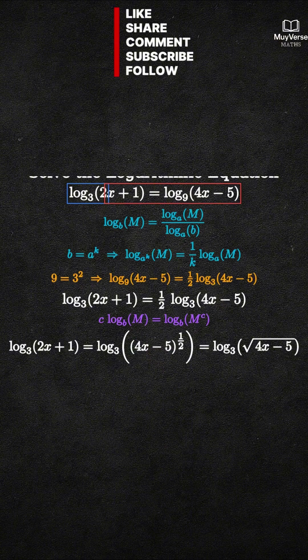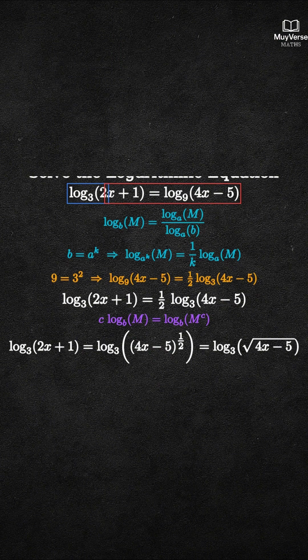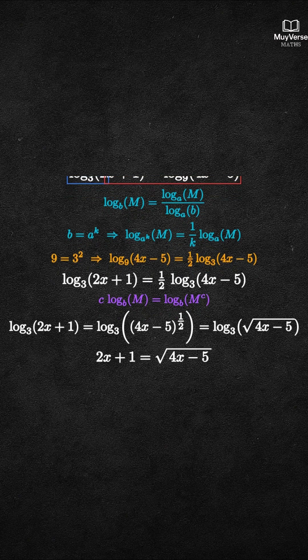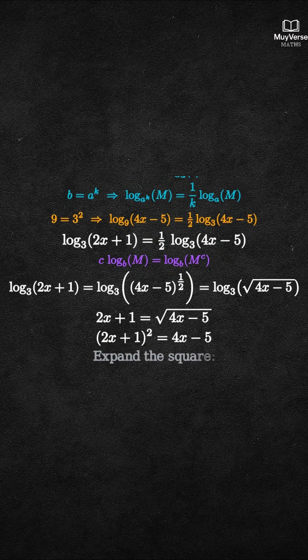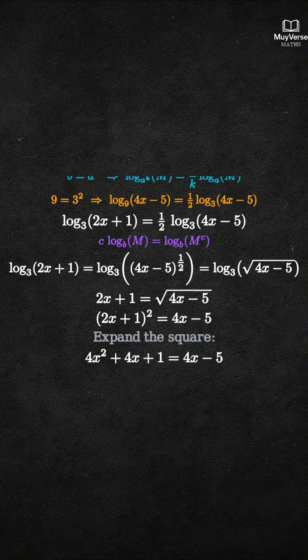Step 3: When logs with the same base are equal, their arguments are equal. So we set 2x plus 1 equal to the square root of (4x minus 5). To remove the square root, we square both sides. The left side becomes (2x plus 1) squared, and the right side becomes 4x minus 5.